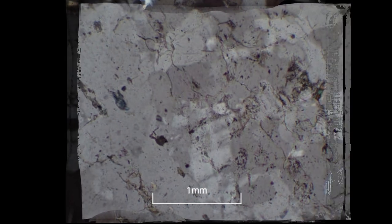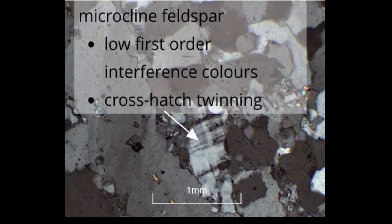Under cross polars, these can be identified as microcline feldspar because the grains have not only low first order interference colours, but show cross hatch twinning.